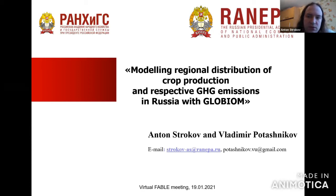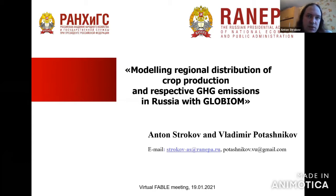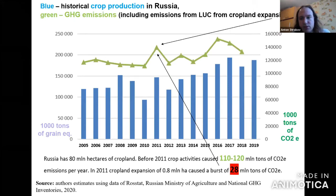We would like to present some of our results from the last year. We've been working with GLOBIOM and we've come up with some interesting results when we tried to model the original distribution of Russian crop production with GLOBIOM to see how greenhouse gas emissions respond at different regional levels to intensification processes or land expansion processes. This first picture is kind of a historical background on Russian development.